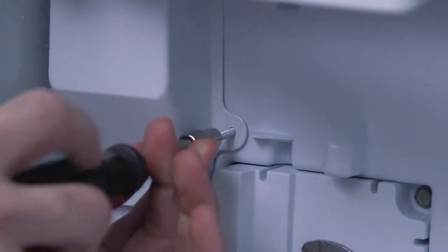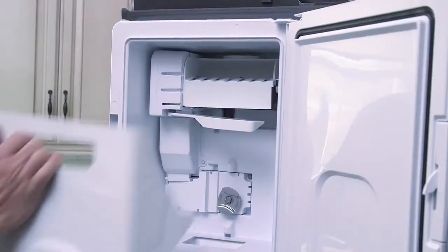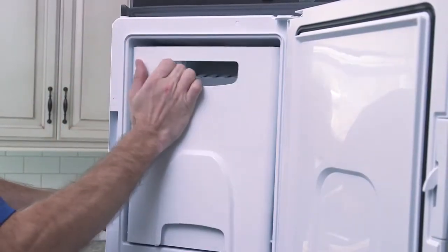Refasten the cover with the second 5/16 inch hex head screw. Be sure not to over tighten it. Replace the ice bucket and close the ice box door.